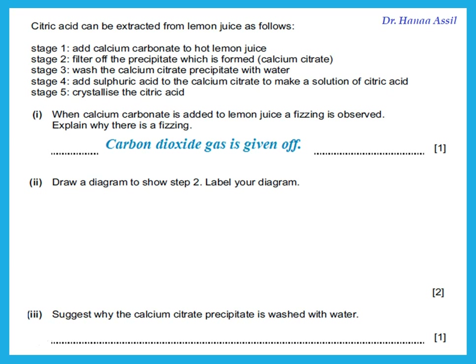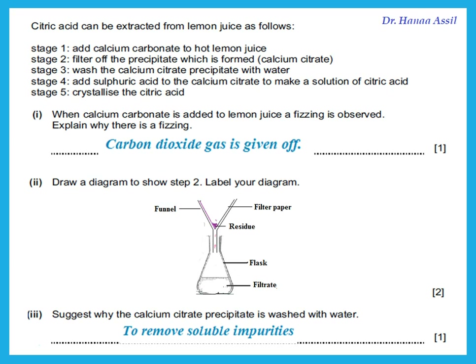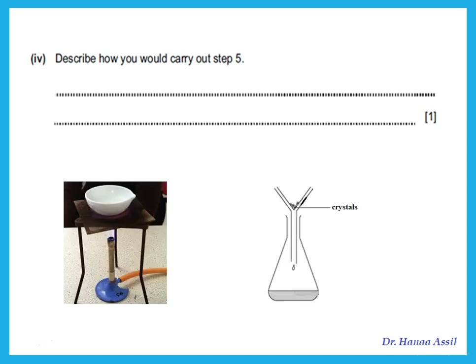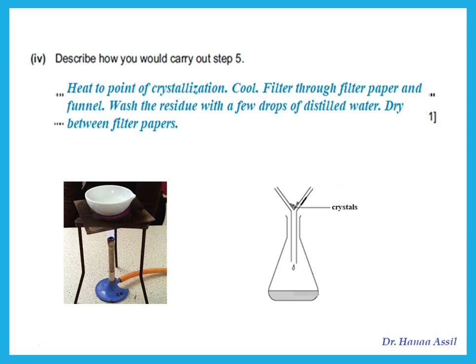In step 2 you are filtering off the precipitate, so draw a diagram showing filtration. Why is the calcium citrate precipitate washed with water? To remove soluble impurities. For step 5 — crystallization — heat the solution to the point of crystallization, then cool to form crystals. Filter the crystals through filter paper and funnel, wash with a few drops of distilled water, and dry between filter papers to obtain pure dry crystals.